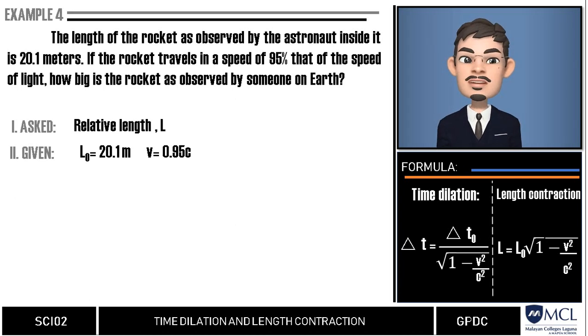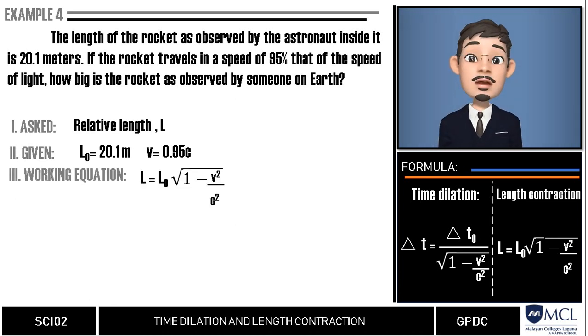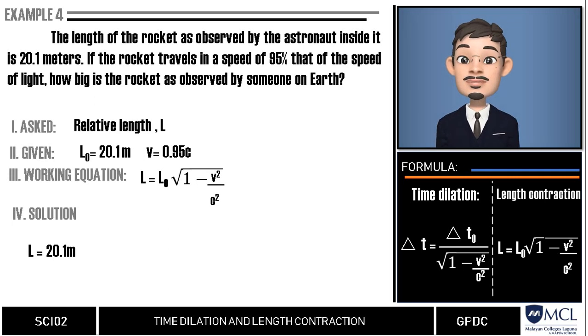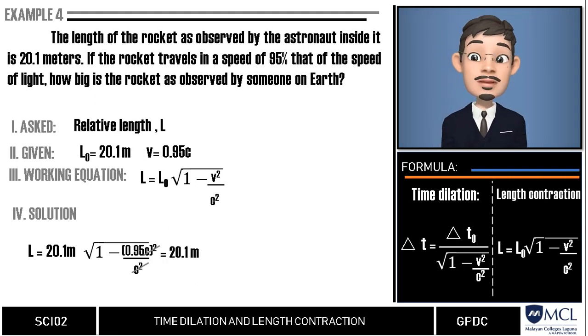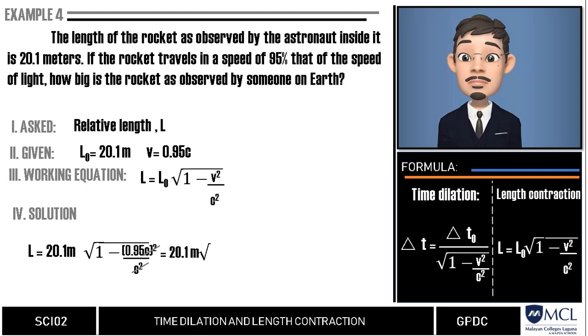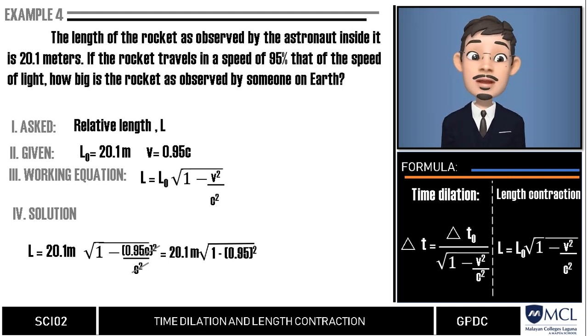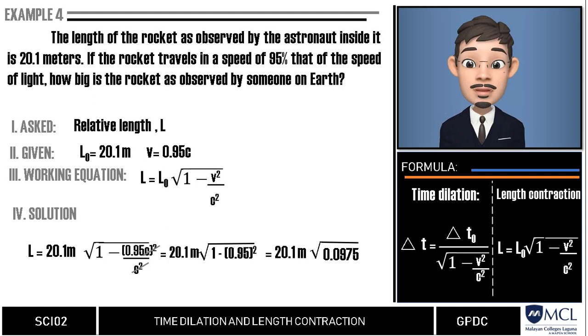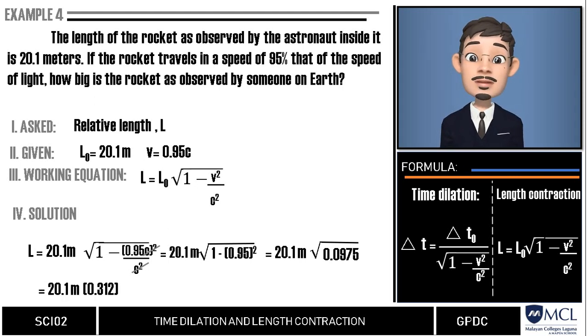We can use our original formula. L is equal to L sub 0 multiplied by square root of 1 minus v squared over c squared. Now, we will substitute the values in that equation: 20.1 meters multiplied by square root of 1 minus 0.95c squared over c squared. We can cancel the c squared and leaves us 1 minus 0.95 squared inside the radical sign, which is equivalent to 0.0975. We will get the square root of this value as indicated in our operations and we will get 0.312.